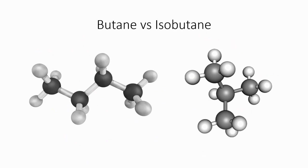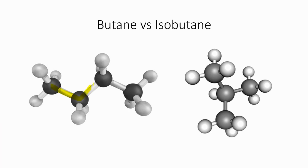Looking at the 3D structure again, the straight-chain butane on the left is actually a zigzag structure — much more like its line angle formula. And isobutane has a V-shape with the branch coming off of it. Their true shape is better represented in the line angle formulas.